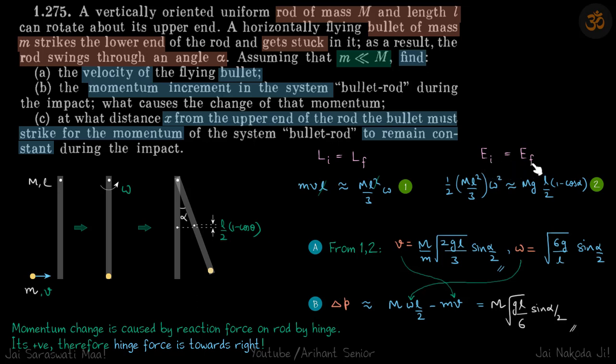You might be thinking, how can we conserve energy if this is an inelastic collision? Well, we are conserving the energy after the collision. Energy when it is already stuck – that is this moment – and when the rod swings to its maximum angle alpha. Between these two moments we are conserving energy, not between this and this.